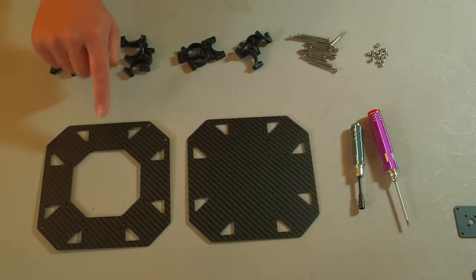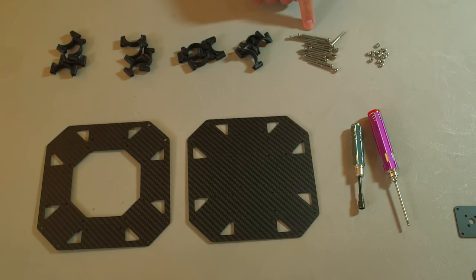To assemble the center section you will need both a top and bottom center plate, eight clamp sets, 16 40 millimeter screws, and 16 nylock nuts.